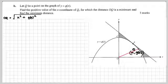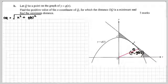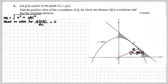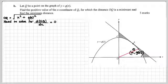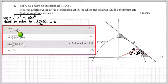That gives us the square root of x² plus [g(x)]², and then we'll take the derivative of that and set it equal to zero for a minimum value. We need to solve for the derivative of the length OQ with respect to x being zero — and that's a perfect case for the CAS calculator.